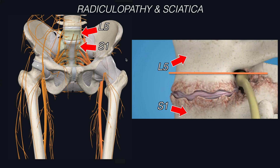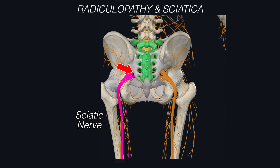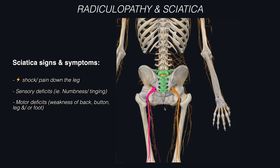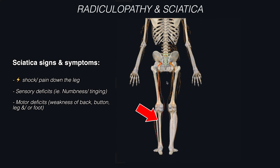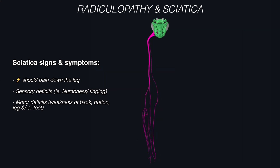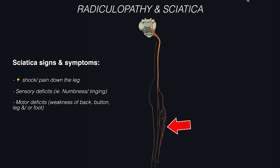In the case of the L5-S1 region, the nerve root irritation and compression here can cause issues down the nerve and reach the sciatic nerve, which can feel like an electric shock or pain going down the entire leg, as well as causing numbness and/or weakness in the back, buttocks, leg, or foot.